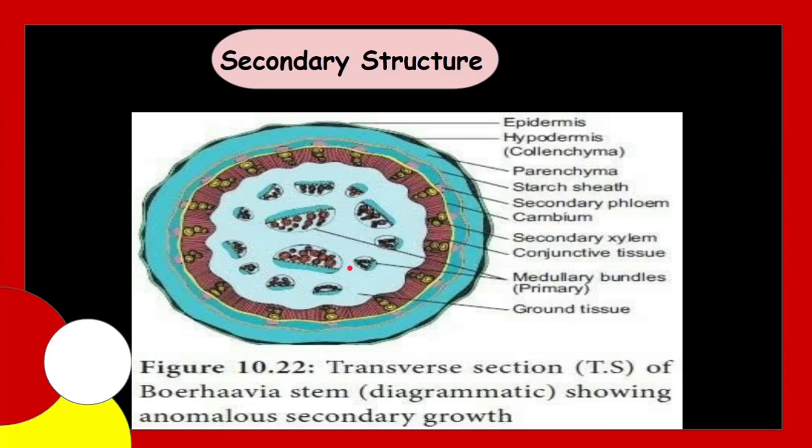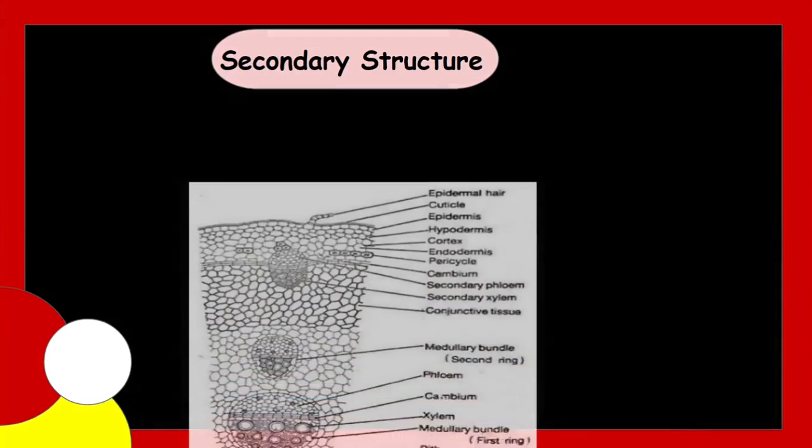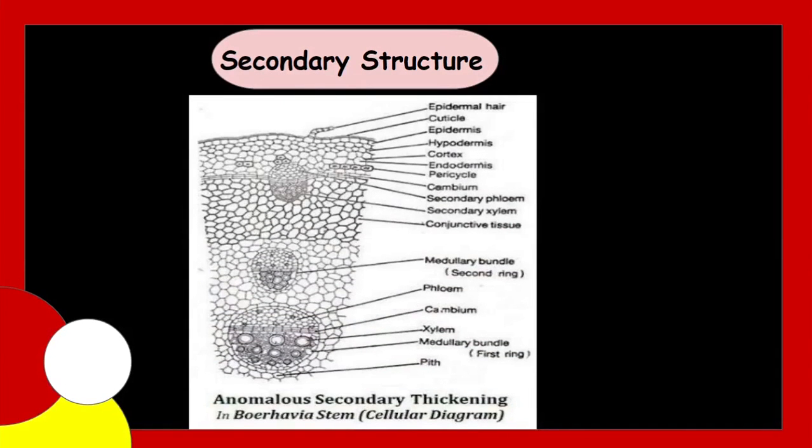The secondary growth begins with the formation of cambium strips in interfascicular areas in outer rings of vascular bundles. These interfascicular cambium strips join with fascicular cambium strips to form a complete ring of cambium. And this cambium produces secondary xylem vessels towards inner side in fascicular region and parenchymatous cells in interfascicular region.